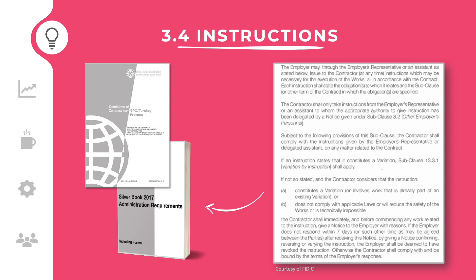To manage the contract in a clear and transparent way, the employer requirements should have an administration requirements section. Such a document describes the obligations about which forms to use, the workflow process, meetings to be held, and reporting. This module is about the instructions which the employer's representative can issue under sub-clause 3.4 of the general conditions.